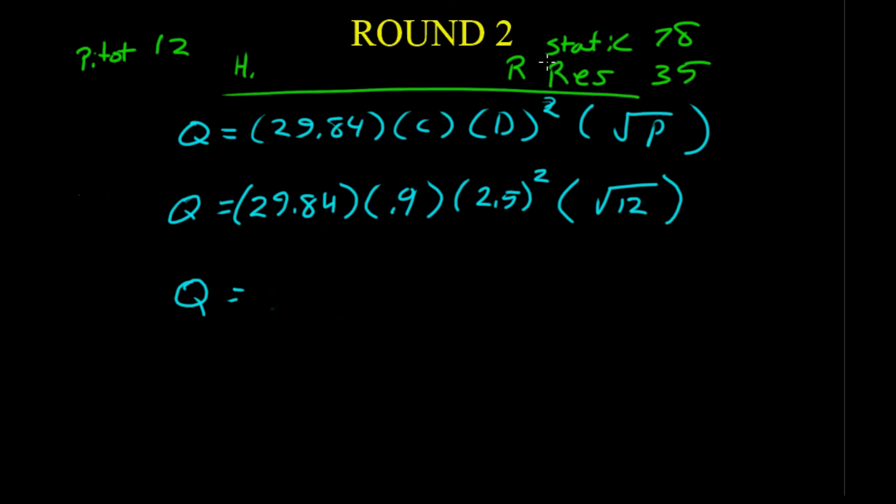New hydrant flow test. We have a pitot pressure of 12 on this fire hydrant. We have a static of 78 and we have a residual of 35. So, 29.84 times 0.9 times 2.5 squared times the square root of 12.